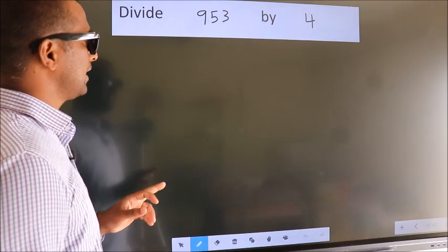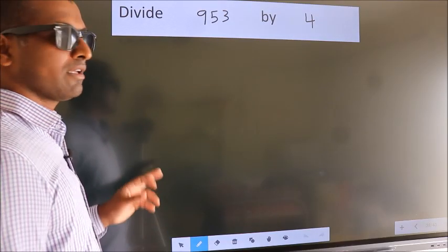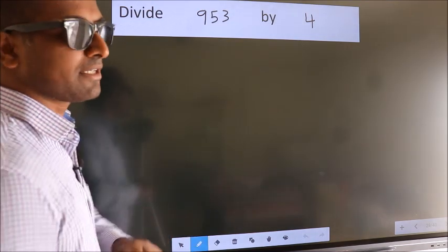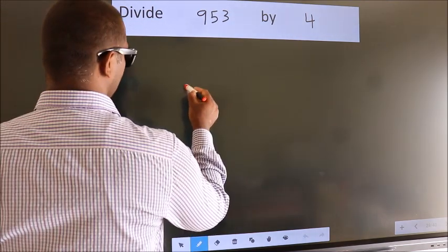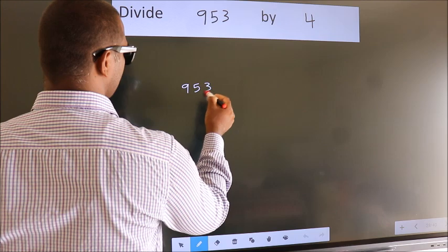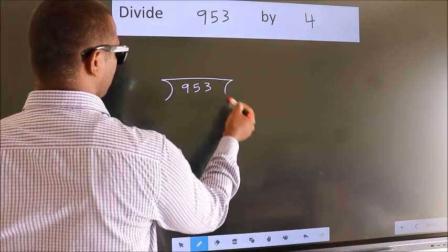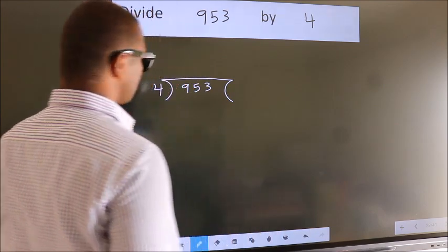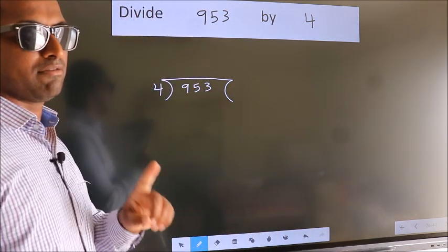Divide 953 by 4. To do this division we should frame it in this way. 953 here, 4 here. This is your step 1.